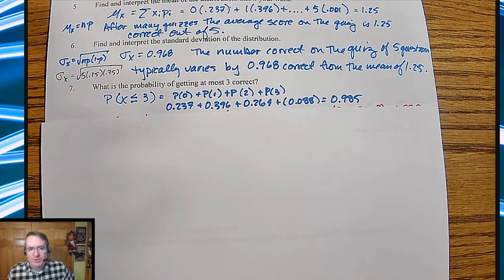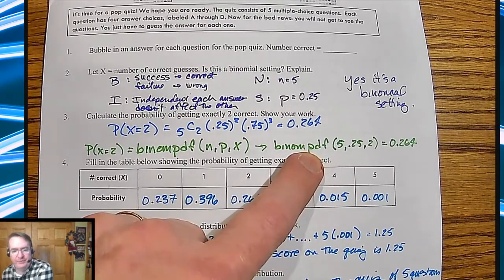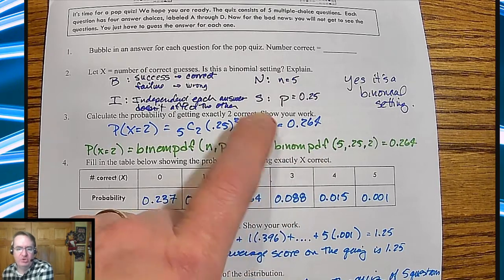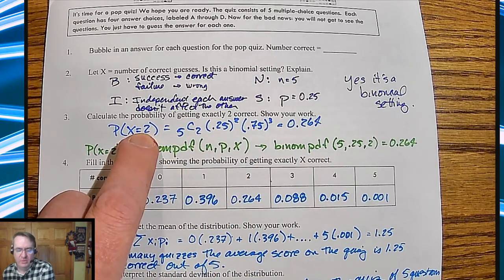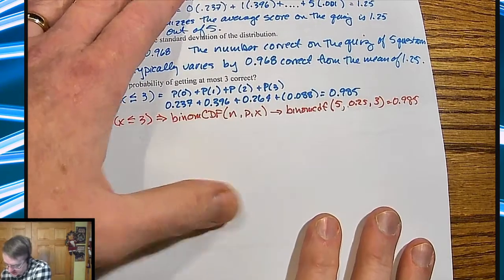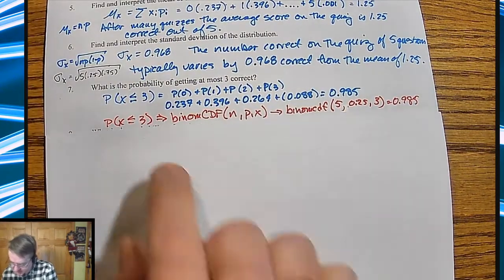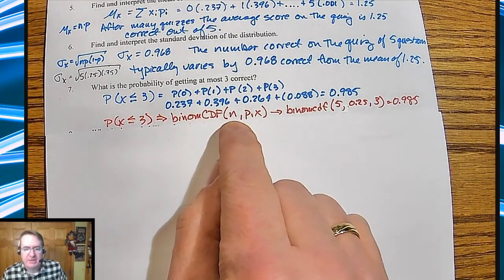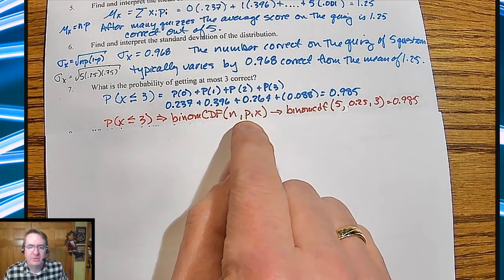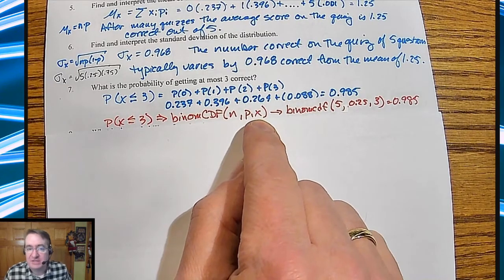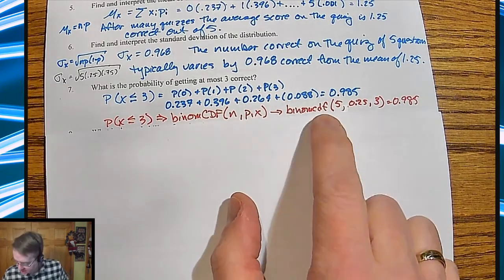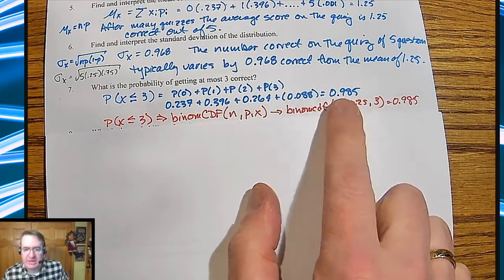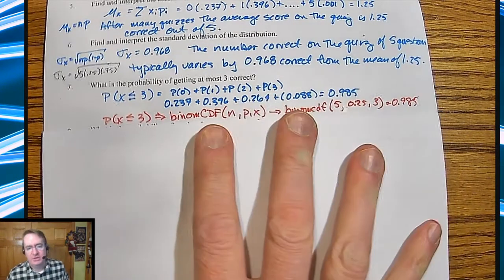Much like with normal distributions, in binomial distributions there is a binomial CDF — cumulative. The binomial PDF talks about just X equals 2, while the binomial CDF handles P(X ≤ 3). Same setup: number of trials, your probability, number of successes you're looking for. And you get the same answer — less adding to do.